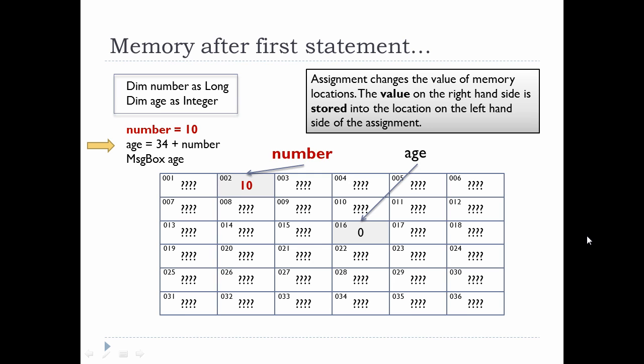In some programming textbooks they actually refer to RHS for right-hand side and LHS for left-hand side. Left-hand side will always be a memory location and whatever's on the right-hand side will always be a value.